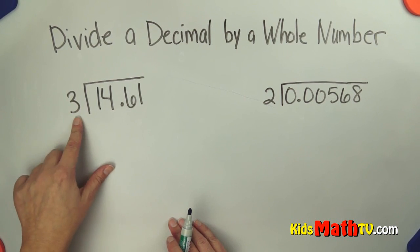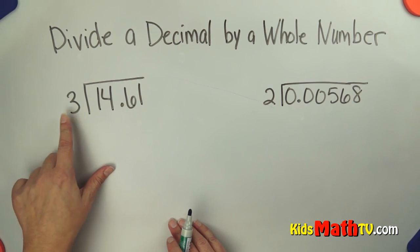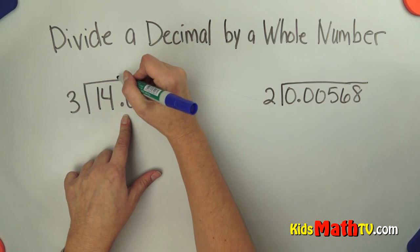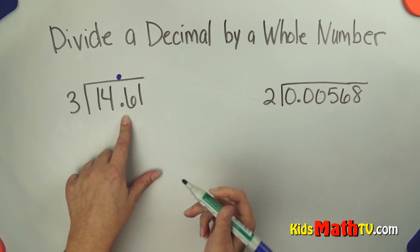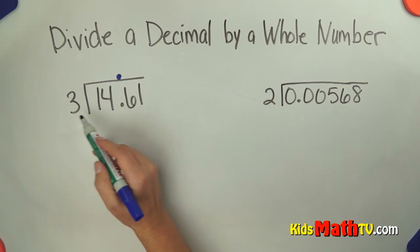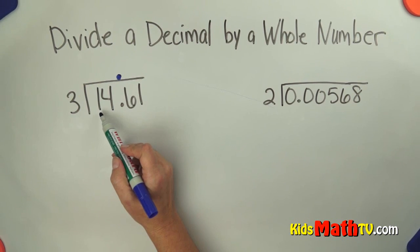I check first to see if there's a decimal in my divisor. We call this number the divisor. There isn't, so now I simply bring my decimal straight up and now I divide. How many threes are in one? Well there's none, so I go how many threes in 14? There are 4.